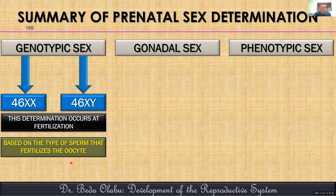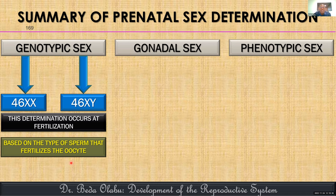Chromosomal sex is determined at the time of conception and is based on which type of sperm fertilizes the oocyte. If the oocyte is fertilized by the Y-bearing sperm, the zygote will be 46,XY — genetically male. If the oocyte is fertilized by the X-bearing sperm, the zygote and hence the embryo will be 46,XX — genetically female.